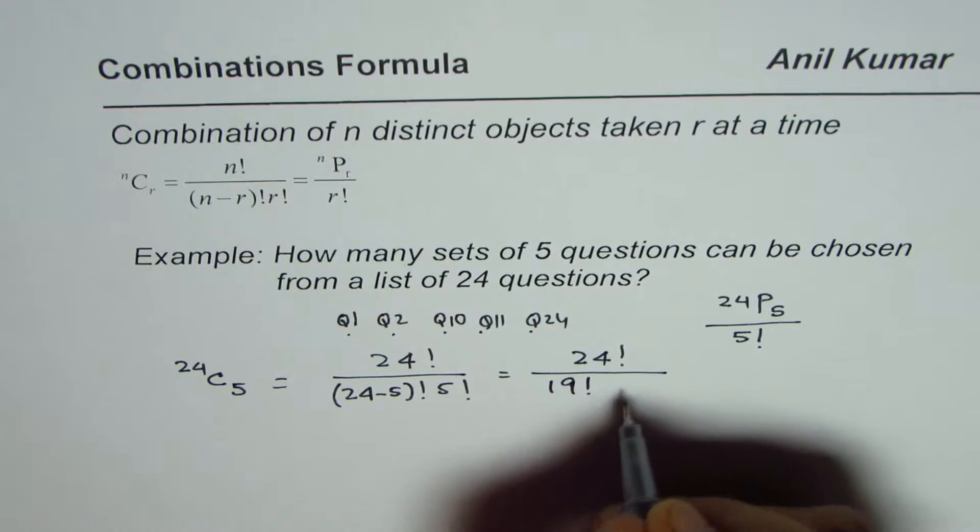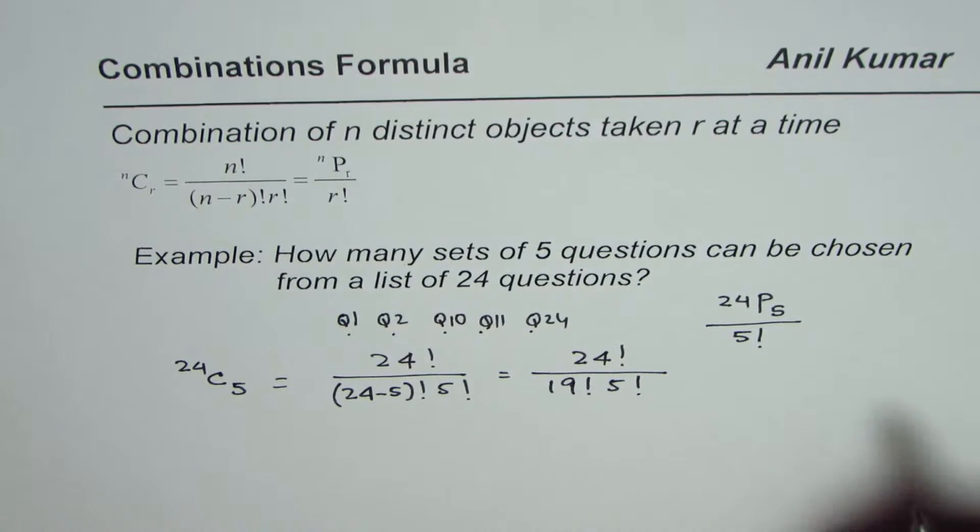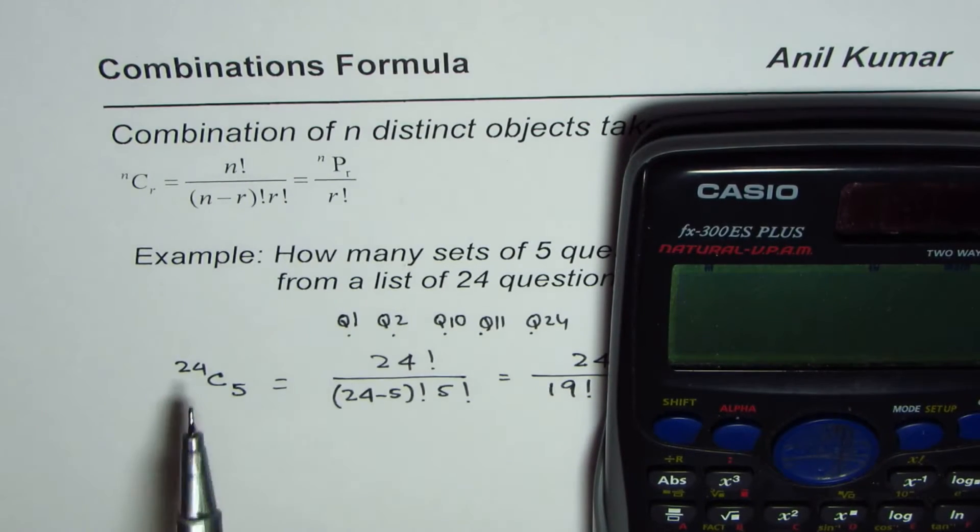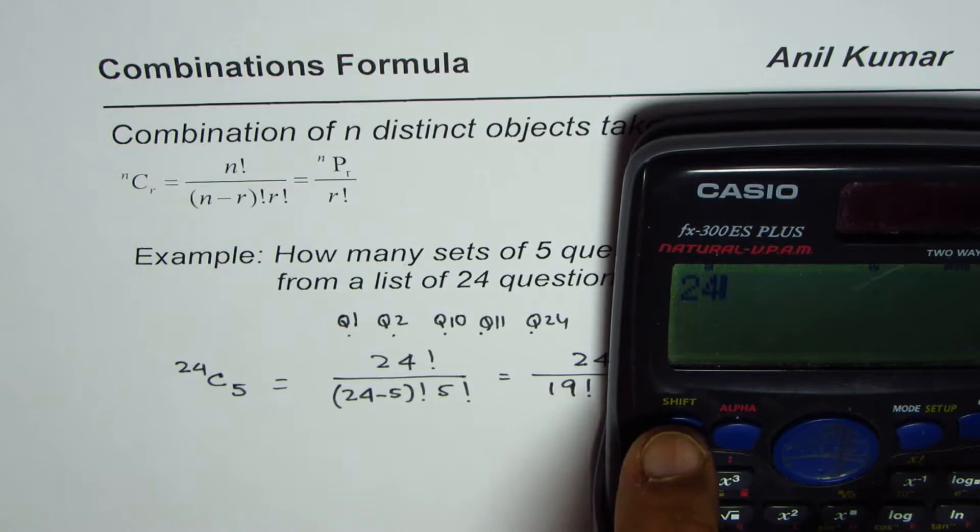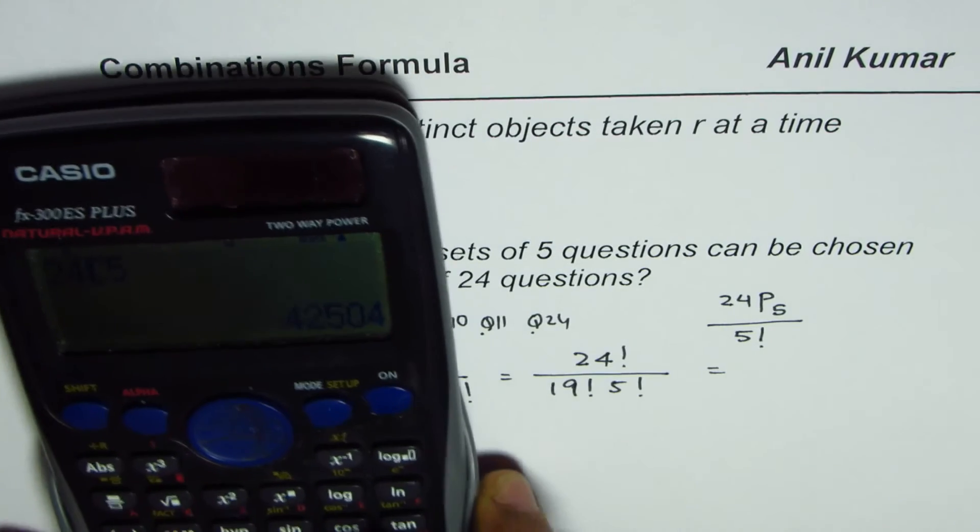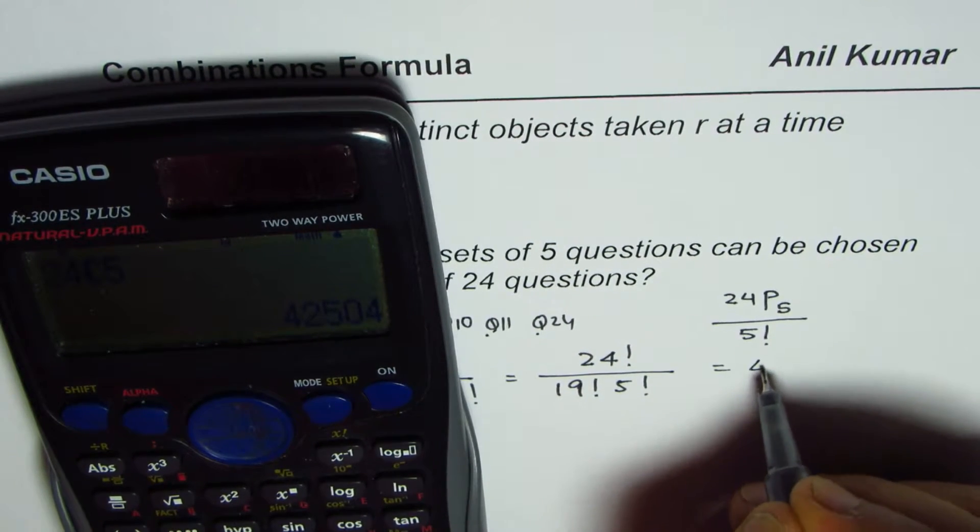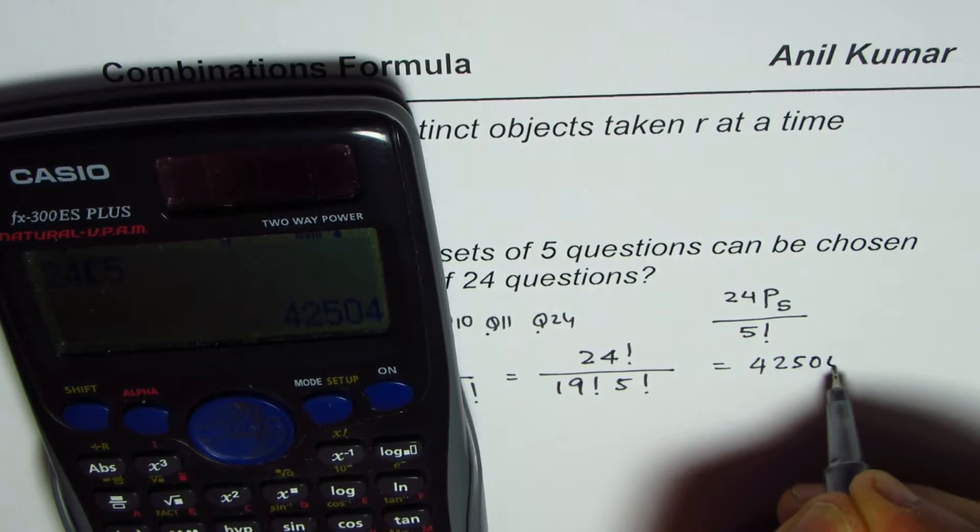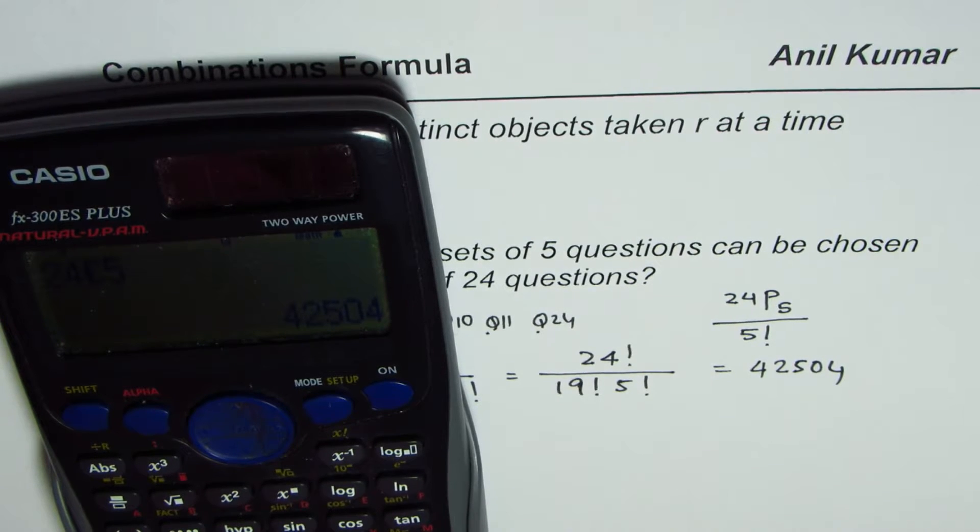You can use a calculator to find the answer, or you could use the function key for combination, which we are going to use now. So 24 C 5 equals 42,504. We get 42,504 as our answer.